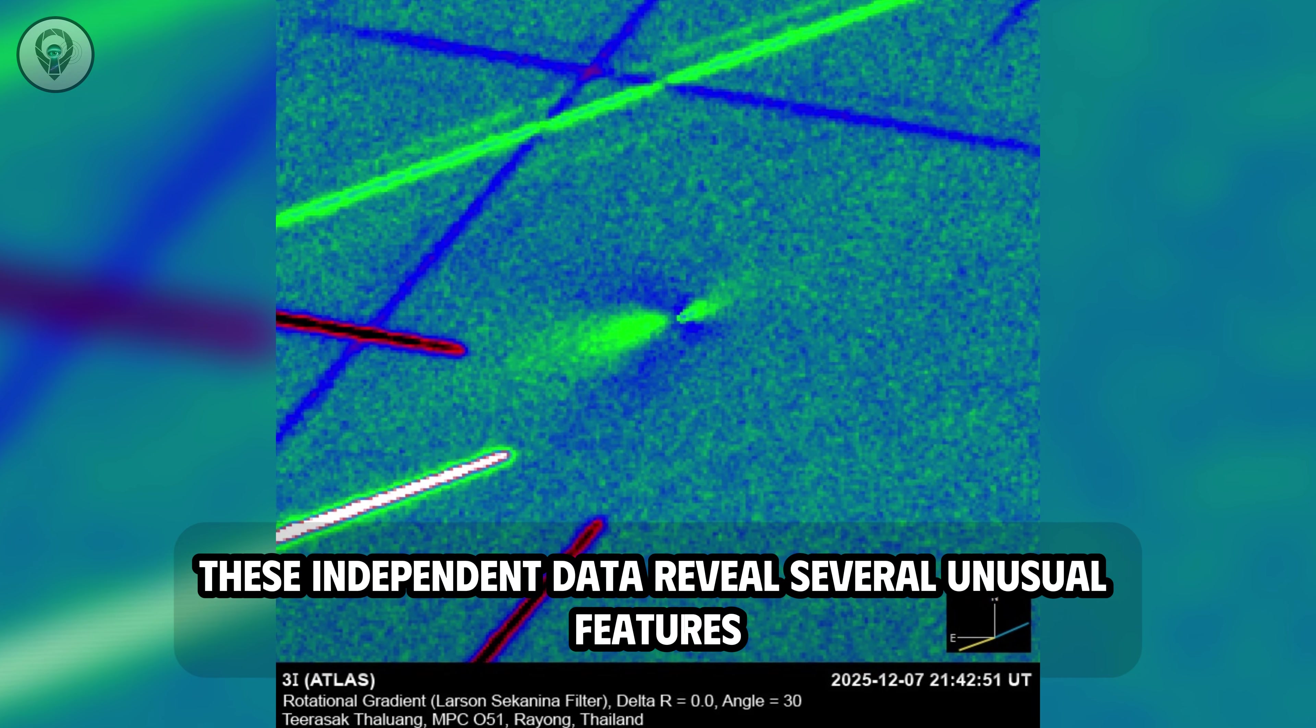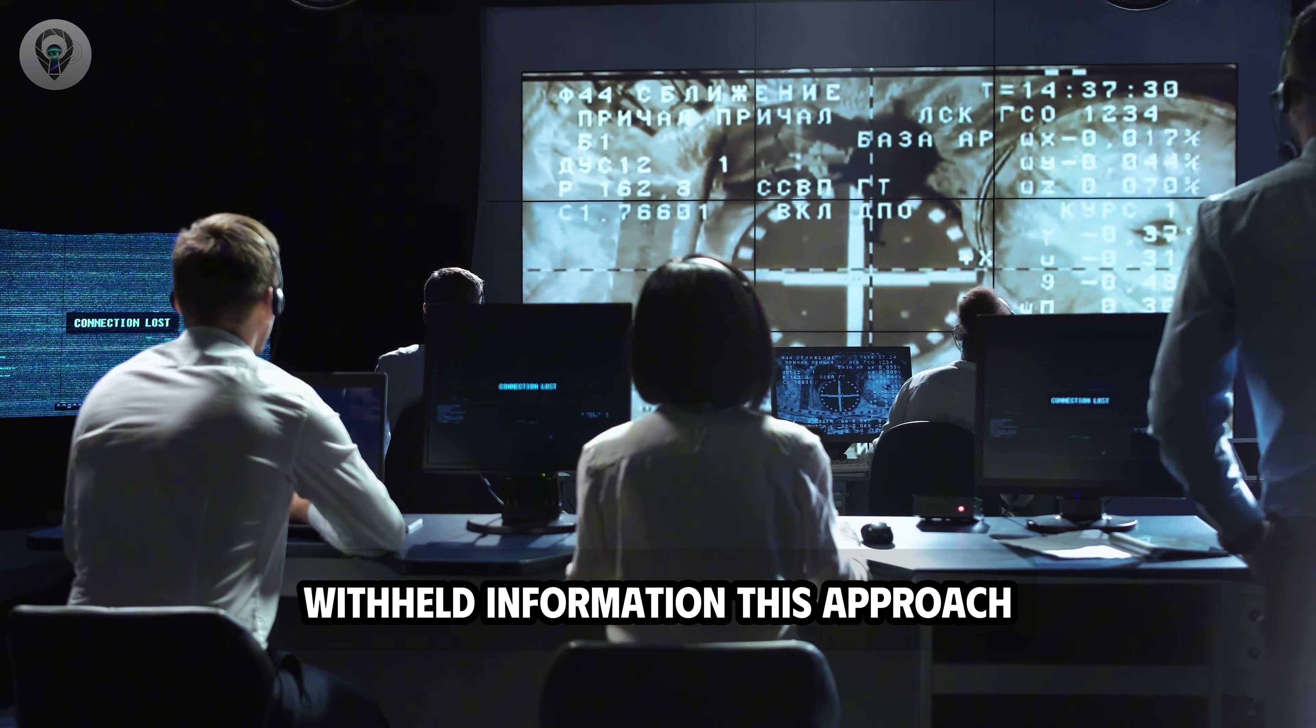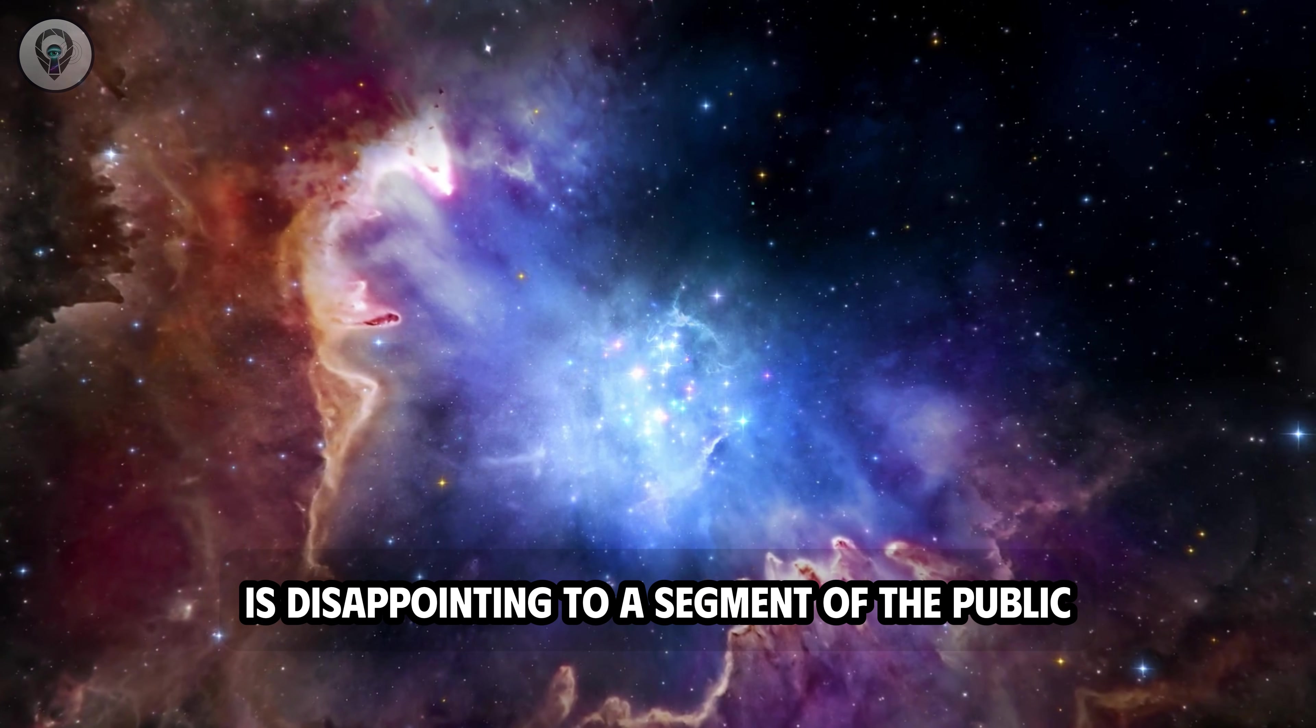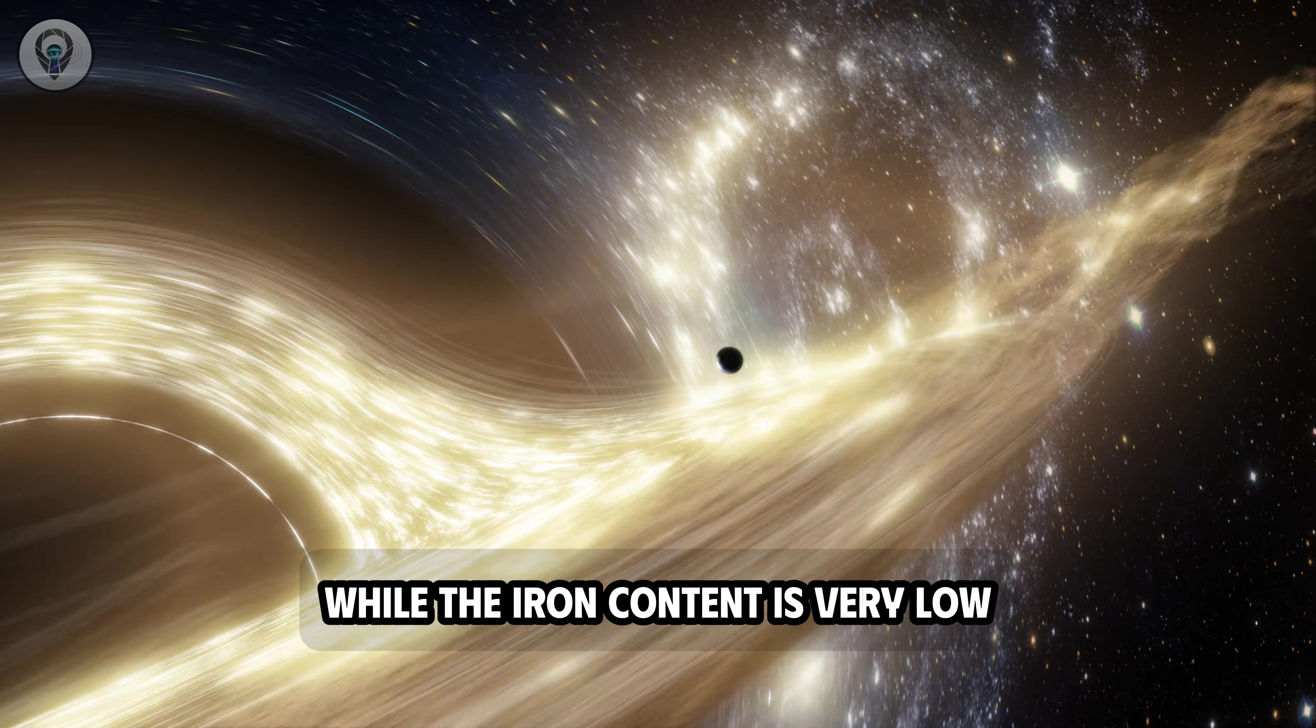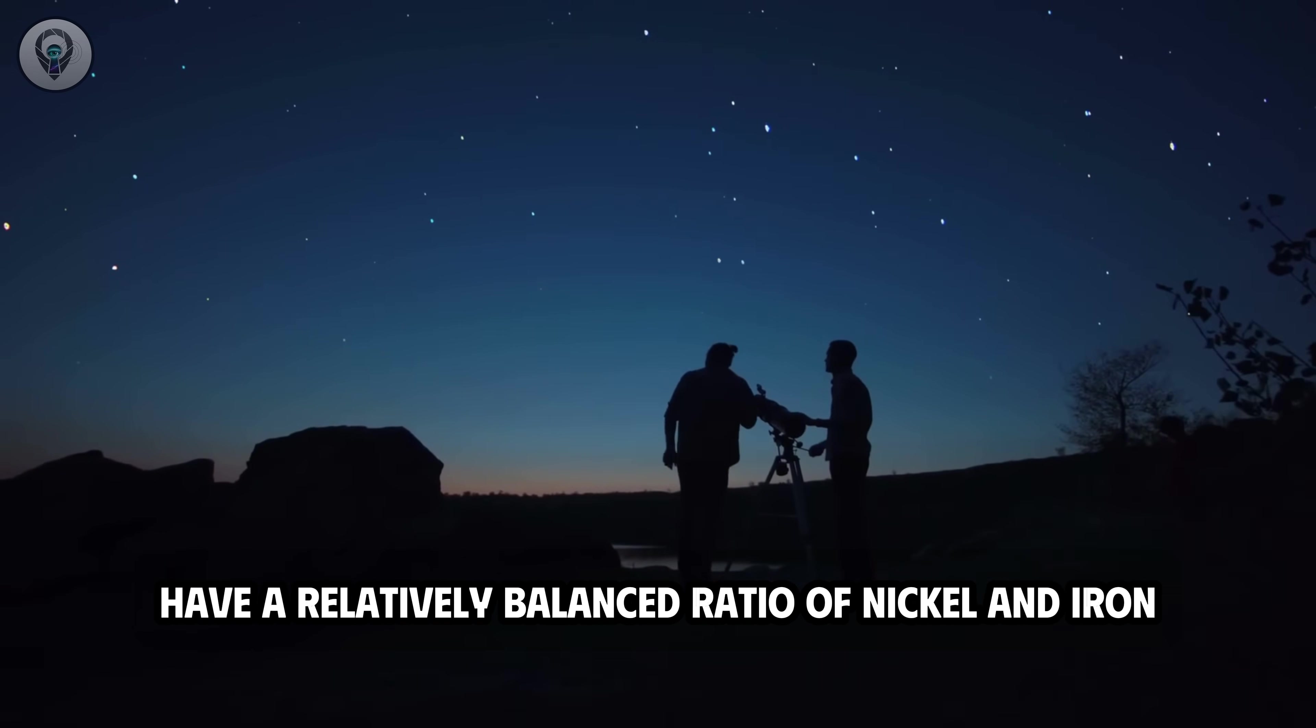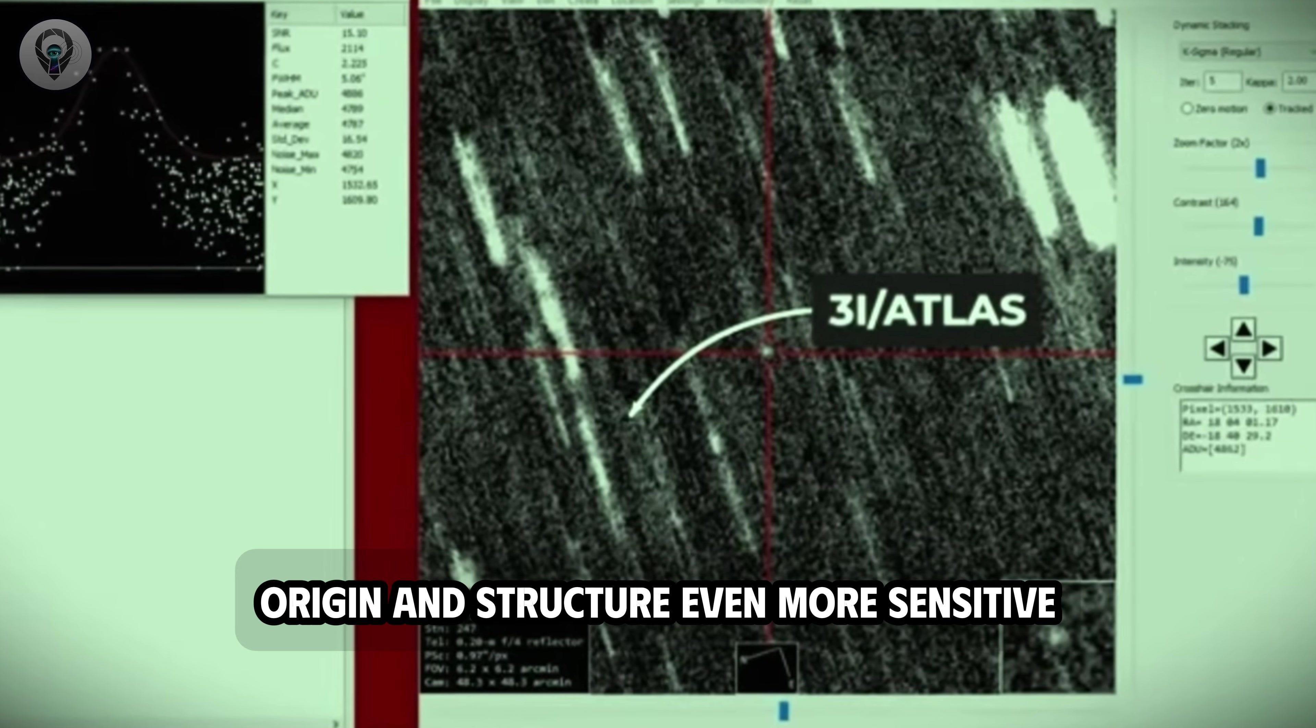These independent data reveal several unusual features not mentioned or adequately explained in official reports. While there is no evidence that NASA intentionally withheld information, this approach, which leans toward premature conclusions rather than acknowledging uncertainties, is disappointing to a segment of the public and the research community. One of the most striking details is the composition of the material released by 3i Atlas. Analyses show that the object releases primarily nickel, while the iron content is very low. This is a rare characteristic as most natural astronomical objects have a relatively balanced ratio of nickel and iron. This discrepancy is usually only found in man-made nickel alloys, making the question of 3i Atlas's origin and structure even more sensitive.